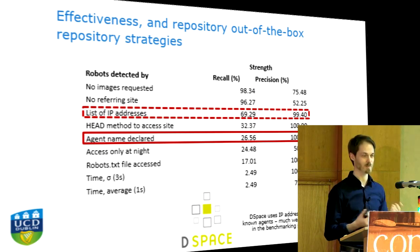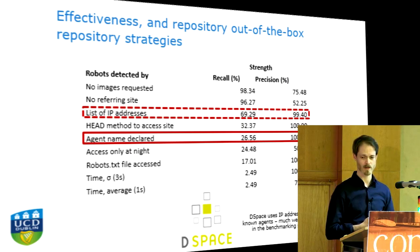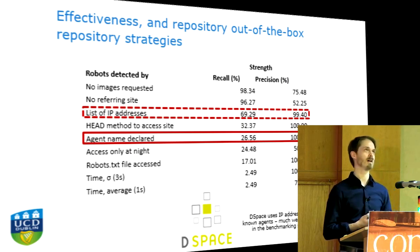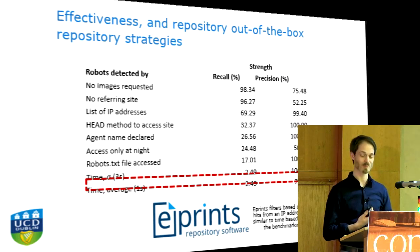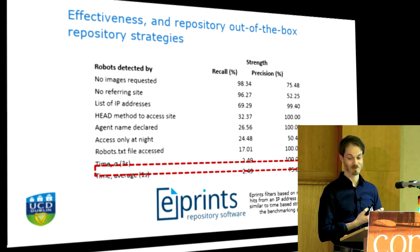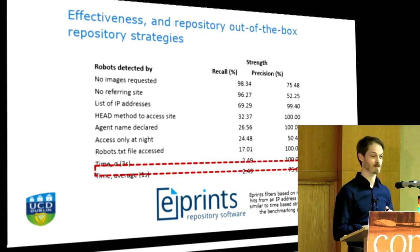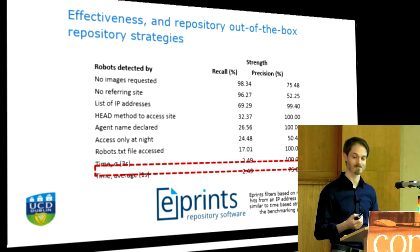DSpace also uses agent names, and that is possibly one of the weakest ways of doing it. EPrints doesn't do much more out-of-the-box — what they do is exclude any IP address that has downloaded 200 or 100 times in a day. The benchmark study said time-based methods were completely ineffective, and while I'm not sure EPrints' method is that bad, it's certainly not great.